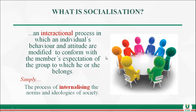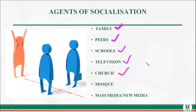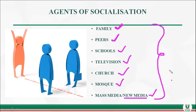The agents of socialization — those that facilitate socialization — include: the family, recognized as the significant other and the first point of socialization for every human being, where we first begin to learn what is obtainable in society; peer groups, which expose us to societal norms and values; television and religious institutions such as churches and mosques; and the mass media and new media, including social media. All of these are key agents of socialization.